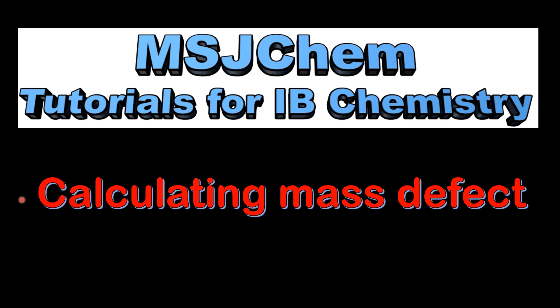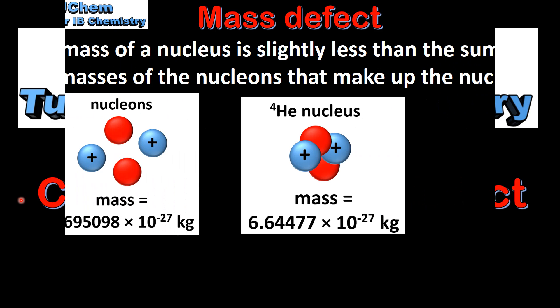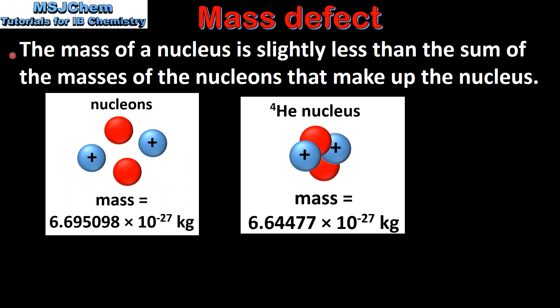This is MSJChem. In this video I'll be looking at calculating the mass defect. The mass of a nucleus is slightly less than the sum of the masses of the nucleons that make up the nucleus.